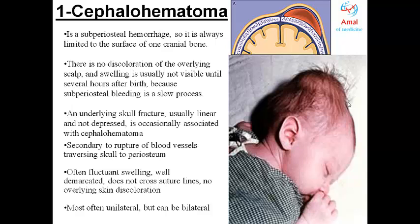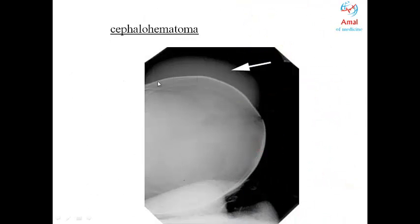Cephalohematoma is caused by rupture of blood vessels traversing the skull to the periosteum. It is often a fluctuant (movable) swelling and is usually unilateral, though sometimes bilateral. In the X-ray shown, the cephalohematoma takes the shape of the underlying bone, and you can see the soft tissue mass and accumulation of blood visible in the image.